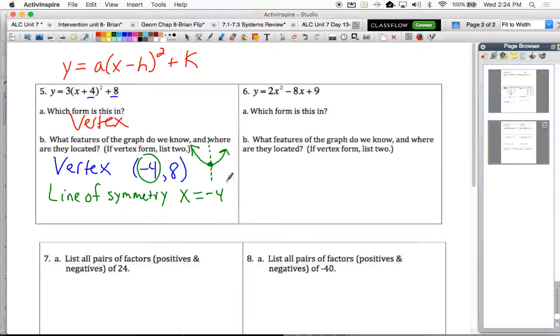Remember, a vertical line always has an x equals equation because the x values are always the same on that line. So those are the two things that we know from the vertex form.